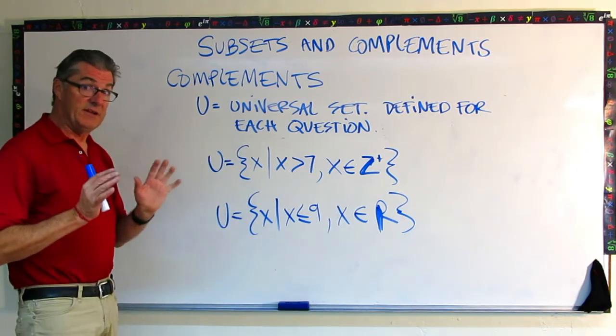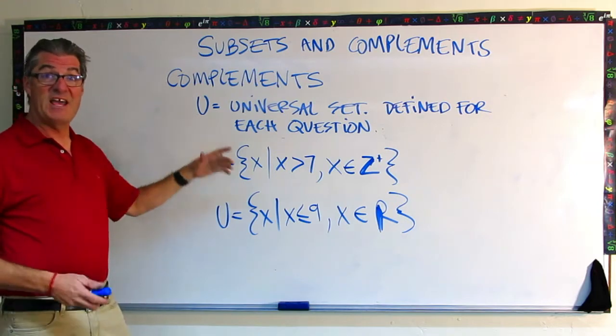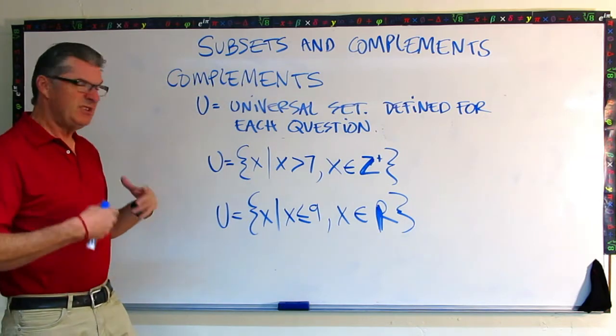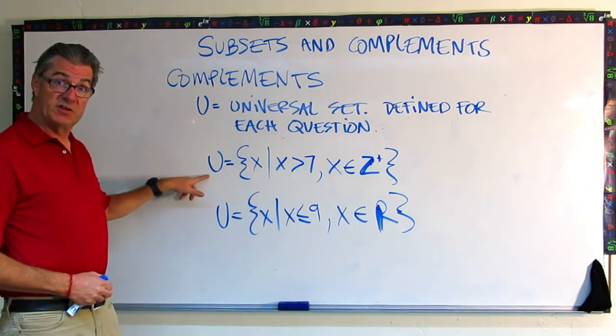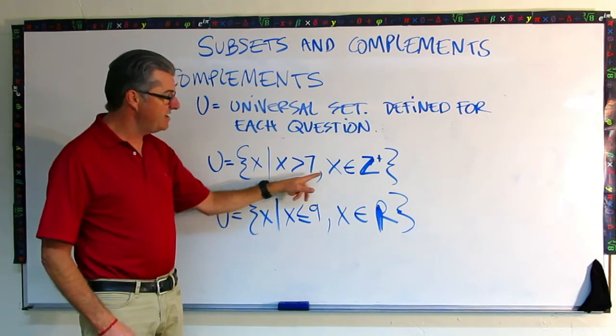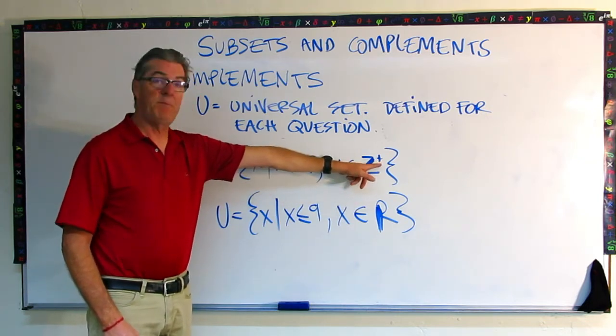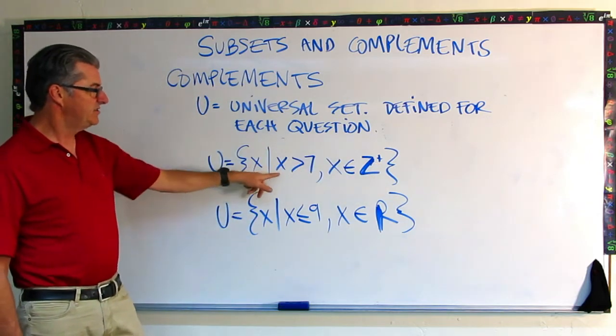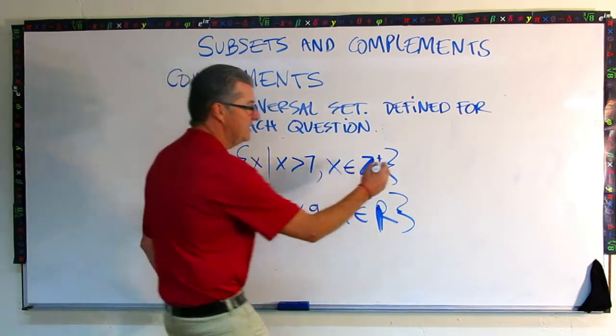The first thing we need to do is talk about this thing called the universal set. And this is a little confusing. It sounds like if it's the universal set, it should be the same everywhere, and that's not true. The universal set is defined for each question that you might receive in the exercises. So I've put two different universal sets here just to play around with these definitions. In this case, we're defining the universal set as the set of all x such that x is bigger than 7 and x is a member or an element of the positive integers.